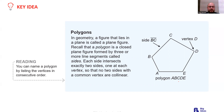When you name a polygon, you use all the vertices going around the figure. The vertices A, B, C, D, and E can be used to name the polygon in any order, as long as you go either clockwise or counterclockwise around the figure. A side is a line segment, such as segment BC, and a vertex is a point.